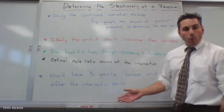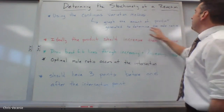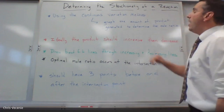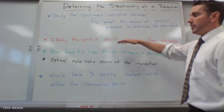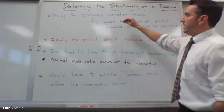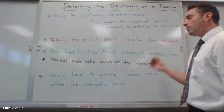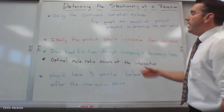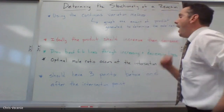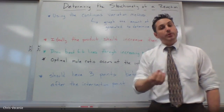Here are the big ideas governing the lab. We're going to graph the amount of precipitate generated from the reaction to determine the mole ratio — the maximum amount of product indicates the best mole ratio. Ideally, when we graph this, the amount of precipitate should increase and then decrease, because we have one reactant limiting us, we hit it perfectly, then the other one limits us — that's why it decreases after. We'll then take our data points and draw best fit lines through the increasing side and the decreasing side, making an X. At the point of that intersection, if you drop down, you'll see the optimal mole ratio of your reactants.